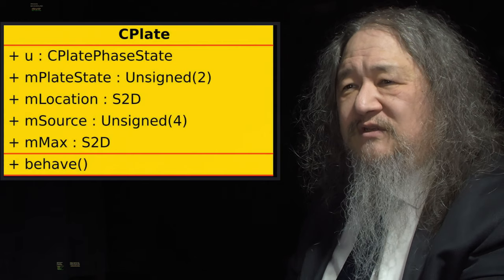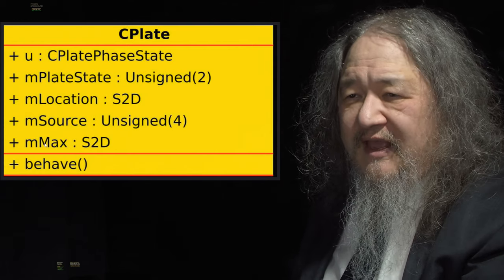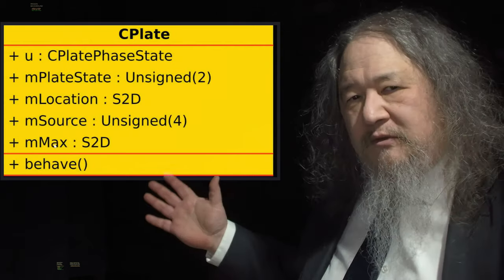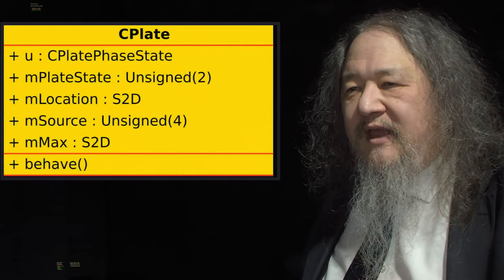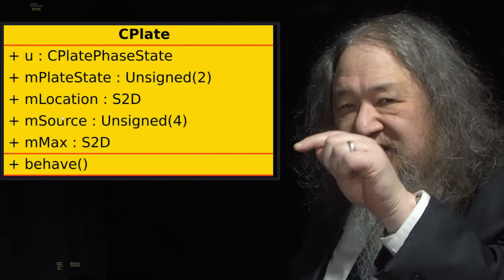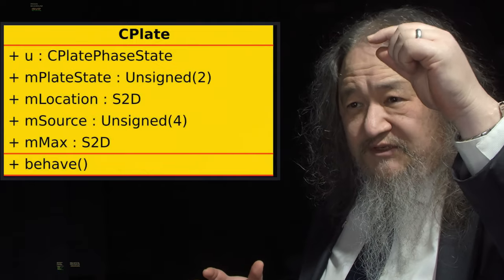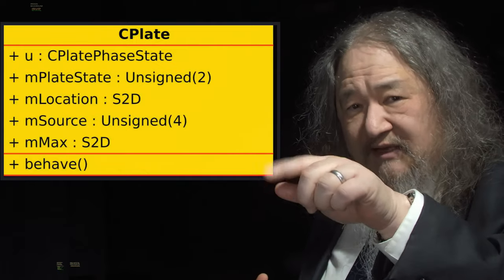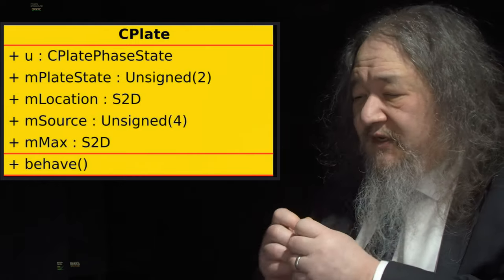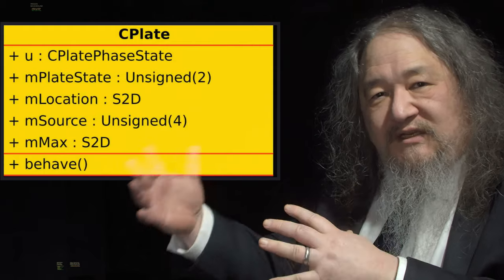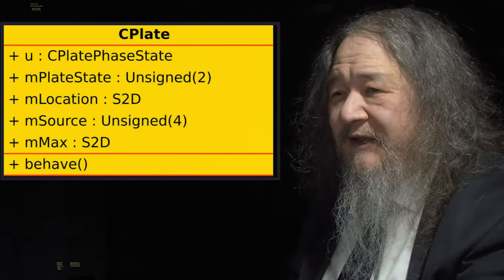And the way it worked was, the whole idea of this C plate was that it had two key data members. M max was the bounding box of the object being copied, whatever it was. And location is the position of this particular atom of C plate within that bounding box, from 0, 0 to M max x minus 1, M max y minus 1, like that. And that's how the C plate knew where it was, and it knew whether something was inside or outside the thing, based on the bounding box.